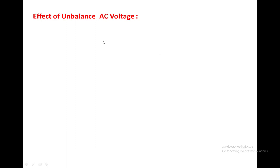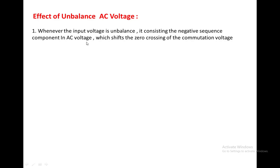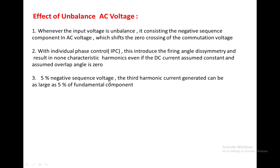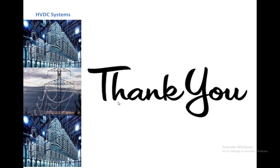Regarding the effect of unbalanced AC voltage: AC voltage feeds power to the two converters at the sending end through the transformer. If there is an imbalance in AC voltage — a change in voltage from phase A to phase B or phase B to phase C, or a change in angle — then the voltage contains a negative sequence component that shifts the zero crossing of the commutating voltage of a device with individual phase control. This introduces firing angle discrimination and results in non-characteristic harmonics. Even if the DC current is constant and the overlap angle is assumed zero, five percent negative sequence voltage can generate third harmonic current as large as five percent of the fundamental component. Thank you — in this class we have discussed non-characteristic harmonics and how they are generated in an HVDC system.